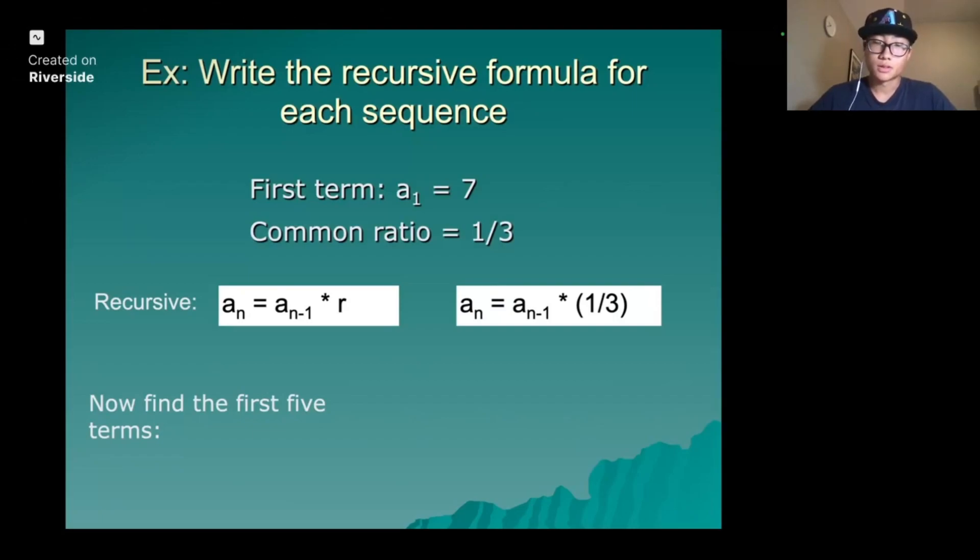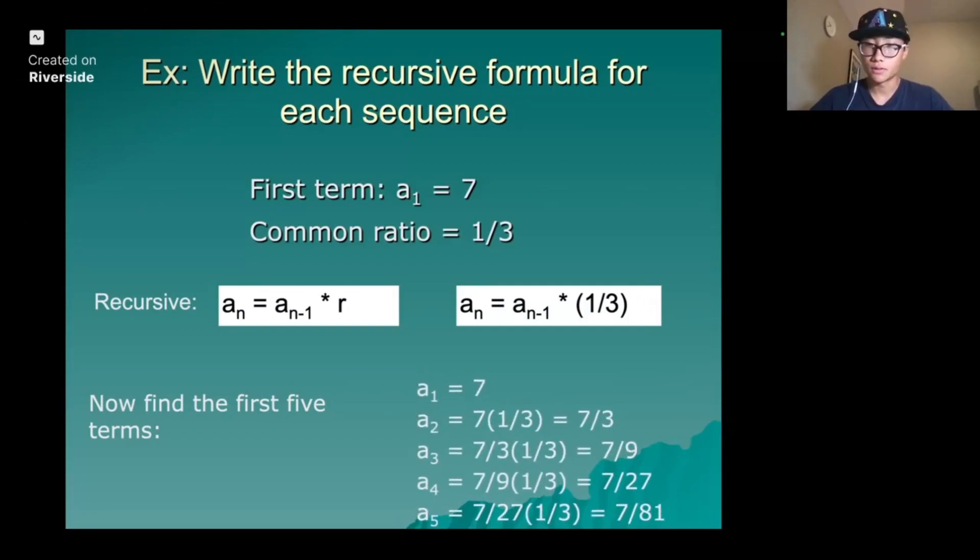Because there is no a1, it's just an, you can plug in any term you want to find the first five terms. But in this case, a1 is the first term 7. First five terms would be a1 is 7, 7/3, 7/9, 7/27, and 7/81.